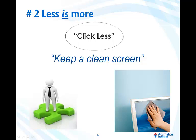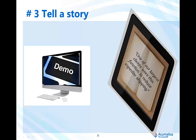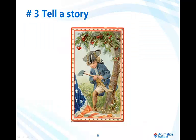Suggestion number three: tell a story. Rather than simply showing a prospect a feature or benefit, tell them a story about a business or a particular manager that realized great success as a result of that feature or benefit. Using this technique makes your presentation more interesting and brings points home with greater impact. After all, we don't remember George Washington as having been honest because some historian mentioned it in a textbook — we remember his honesty because of the story about the cherry tree. Incidentally, feel free to make up the story. The cherry tree story never happened either — and really, is anyone going to begrudge you exercising a little poetic license?